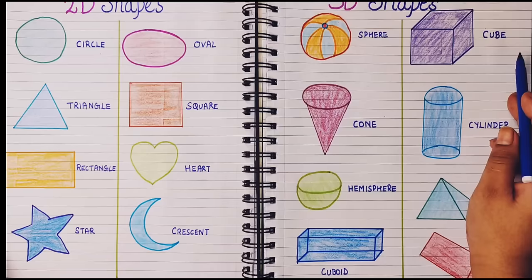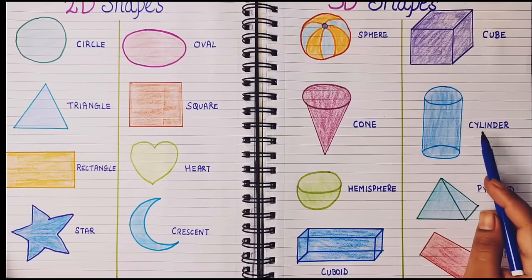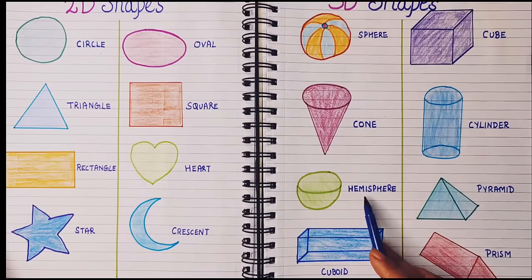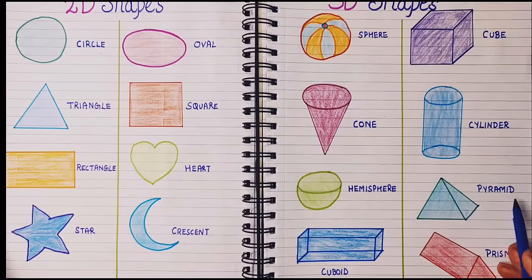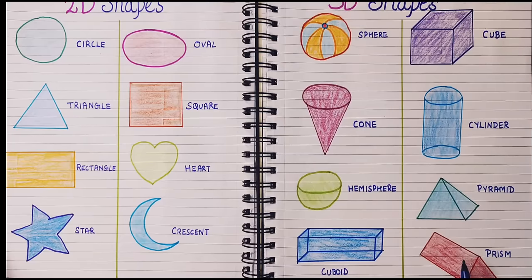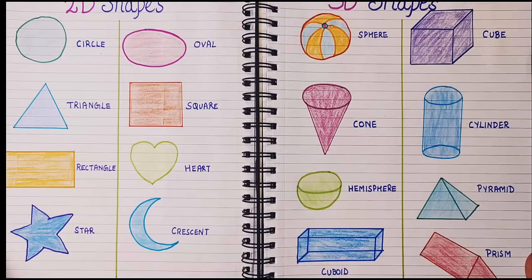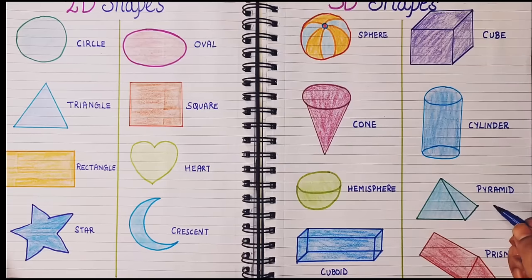Next, let's look at the 3D shapes: sphere, cube, cone, cylinder, hemisphere, pyramid, cuboid, and prism shape. I hope all the shapes are clear to you.